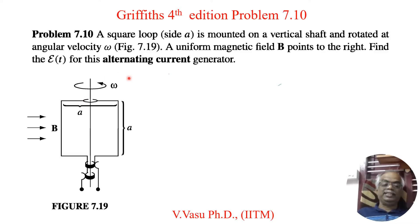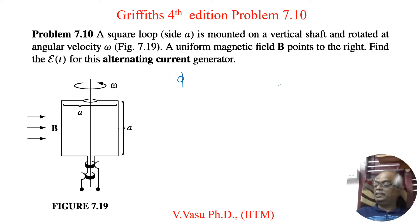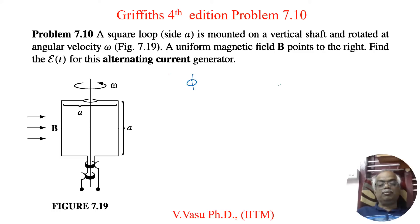To find the induced EMF, we use the magnetic flux. The magnetic flux Phi is defined as Phi equals B dot A, the dot product of the magnetic field and the area vector.